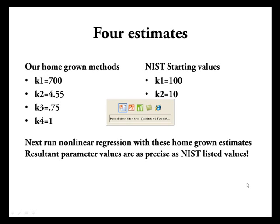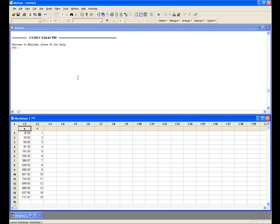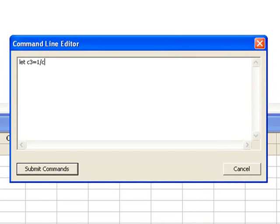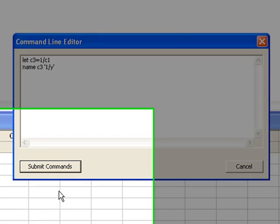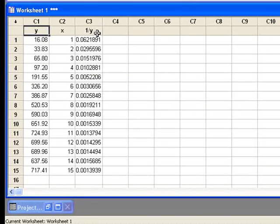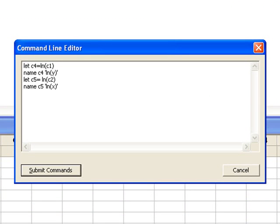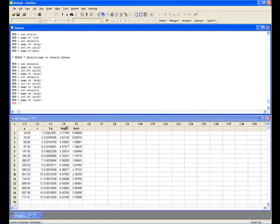Okay, now I'm going to Alt-Tab over to Mini-Tab and show how to make the 1 over Y the log of Y. The first thing we do is go up to the Edit command, go to the Command Line Editor, and then we're going to use a command let C3, the next available column, equal 1 over C1. That's the Y value. I'm going to name C3, single quote, 1 slash Y, single quote. I'm going to submit the command. And there you can see very neatly that we not only compute the values of 1 over Y, but we name the column 1 over Y. I've saved a little time by re-entering into the Command Line Editor the following values. I let C4 equal the log of C1, and I named C4 the log of Y. I let C5 equal the log of C2, and I've named C5 the log of X. So, let's go ahead and submit those, and there we have it.